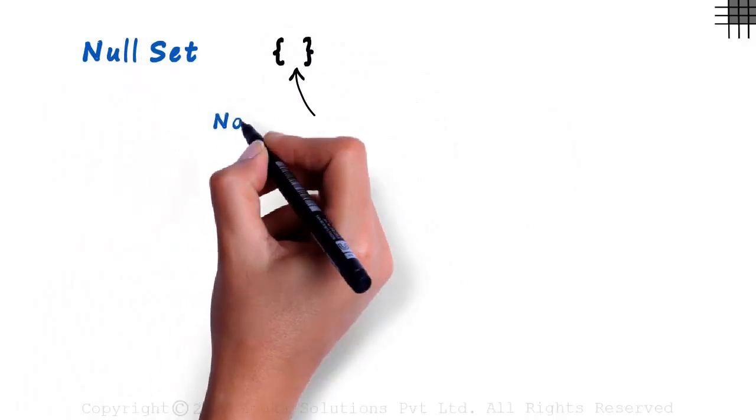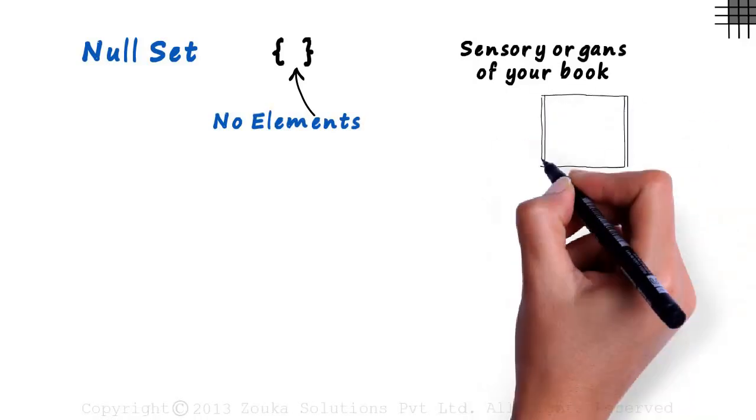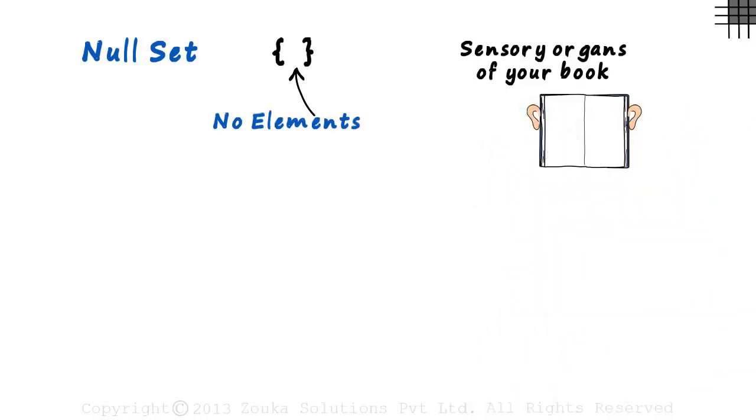What is a null set? It's a set like this with no elements inside it. Like the set of sensory organs of your book. Your book is a non-living thing and does not have ears or eyes, which means it's an empty set or a null set. They both mean the same.